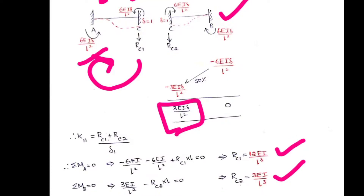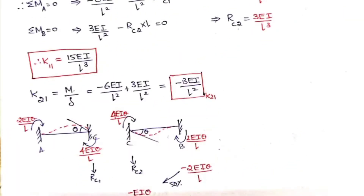For K21, the load is a moment but the displacement is vertical (direction 1). The moment at point C from the left beam is minus 6EI/L² (anticlockwise) and from the right beam is 3EI/L². Summing these gives K21 equals minus 3EI/L².